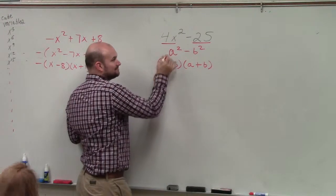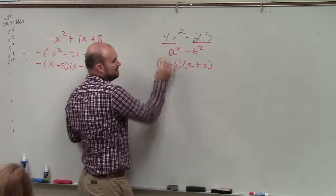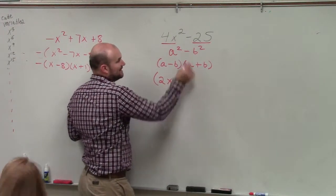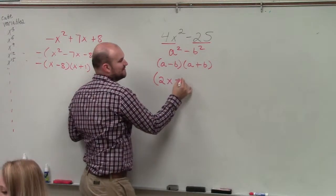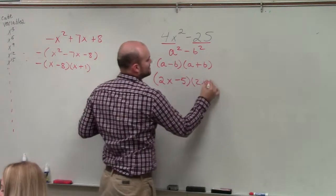minus square root of 25 is going to be 5, times 2x plus 5.